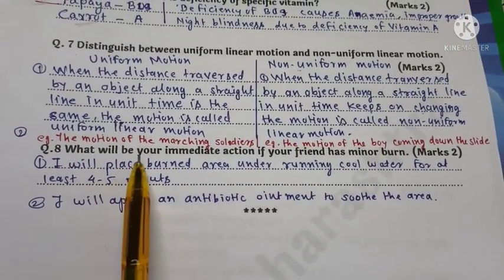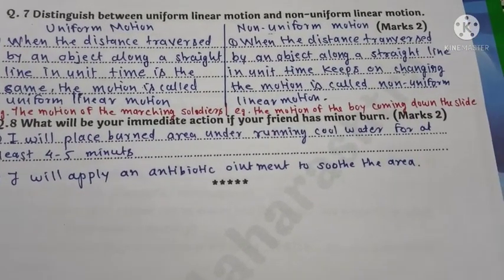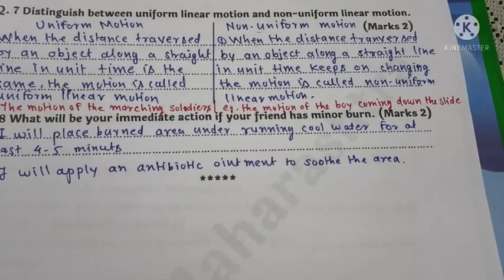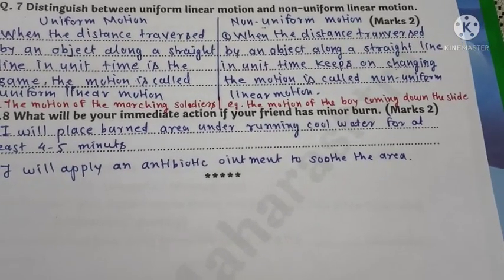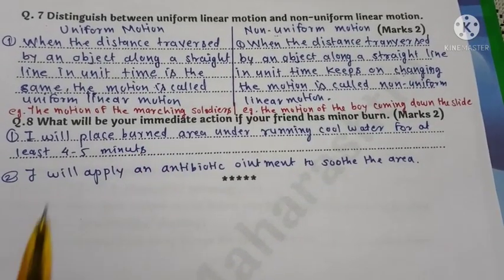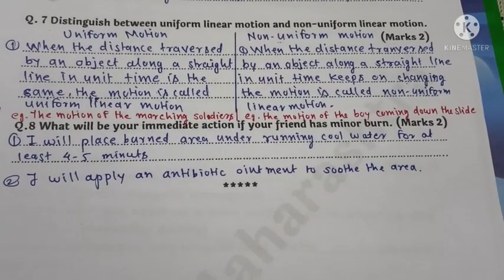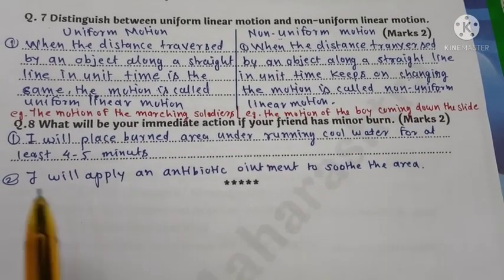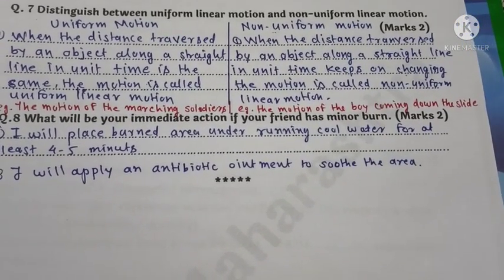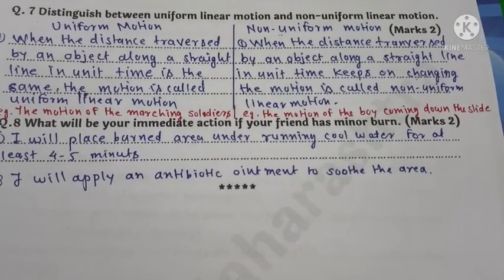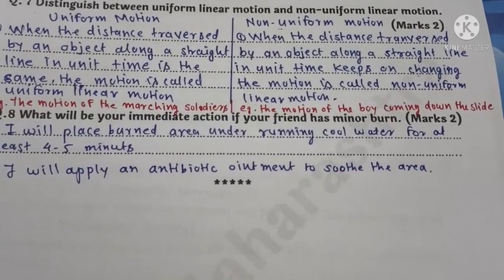Last question: What will be your immediate action if your friend has a minor burn? You should put the burned area under running water for at least four to five minutes. Then apply an antibiotic ointment to soothe the area.